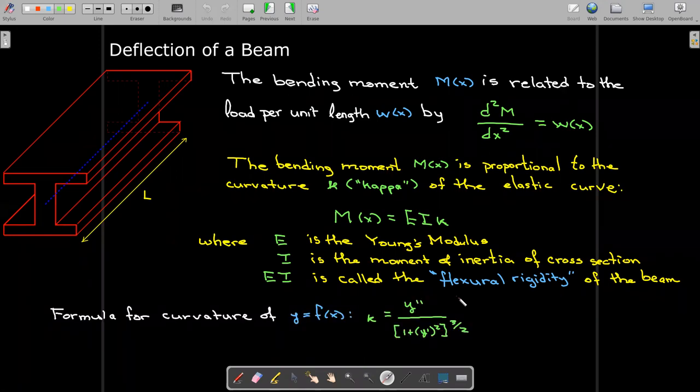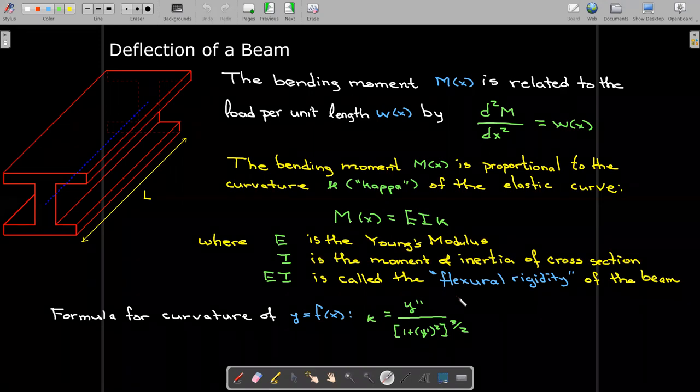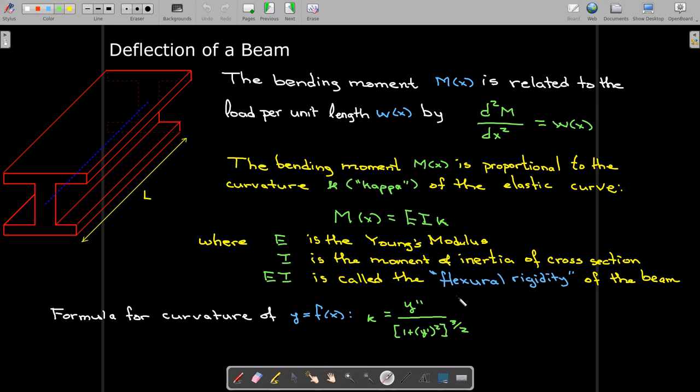If you've not taken multivariable calculus, you may not have seen this formula before, but we'll take it as given: for a curve y = f(x), the curvature at any point x is given by a fraction with the second derivative on top, and on the bottom one plus the first derivative squared, raised to the power of three halves.